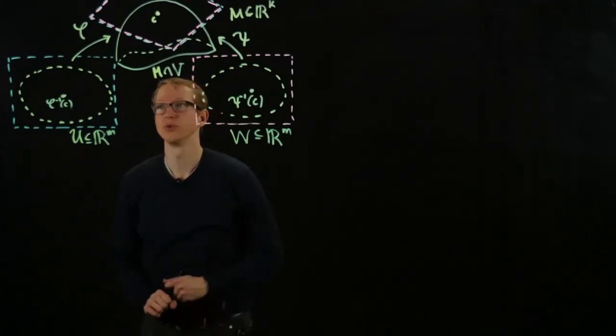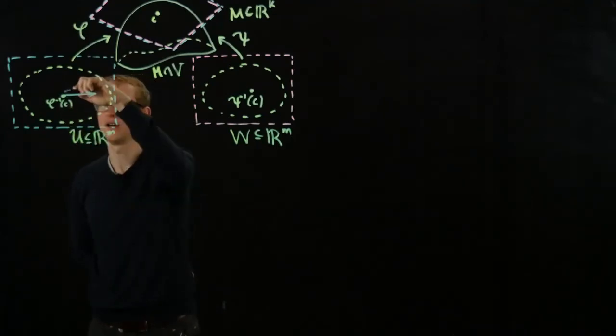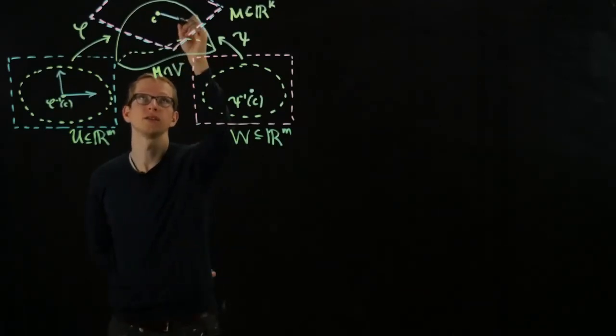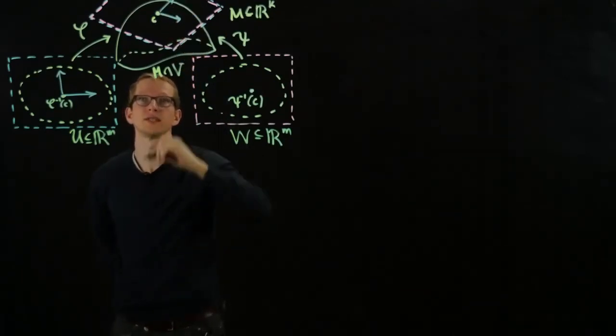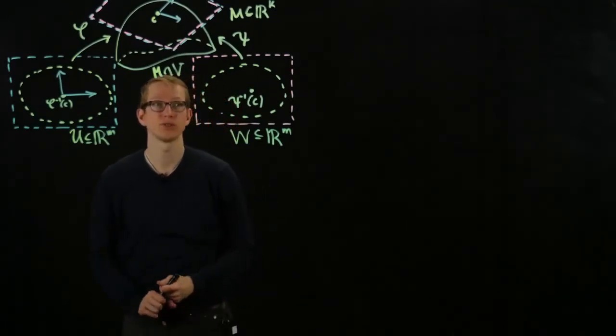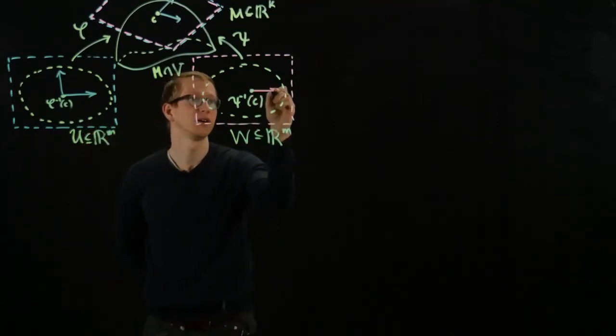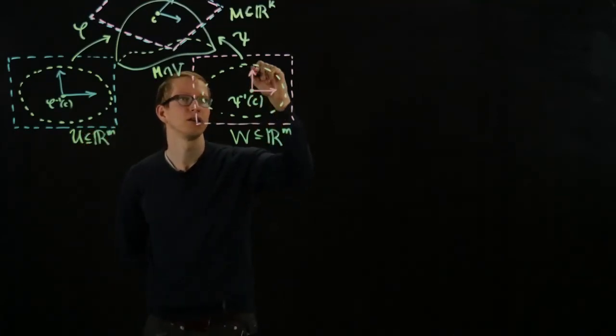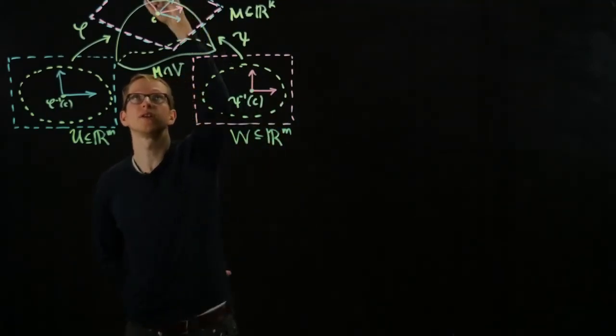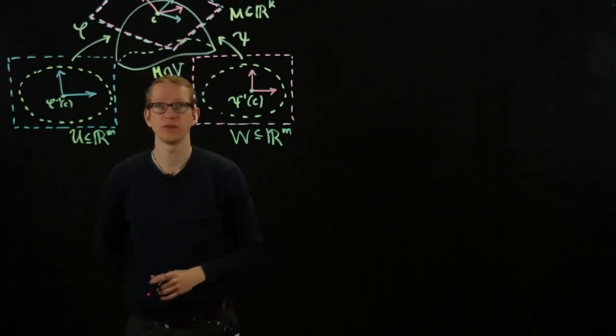However, what's not true, and I briefly mentioned this, is that if I had a basis here of vectors, then these individual vectors might get sent to something like this here. But for a different choice of parametrization, for instance, I could have taken this picture and just rotated it, the basis vectors here might get sent to completely different vectors in the tangent space of the manifold at that point.